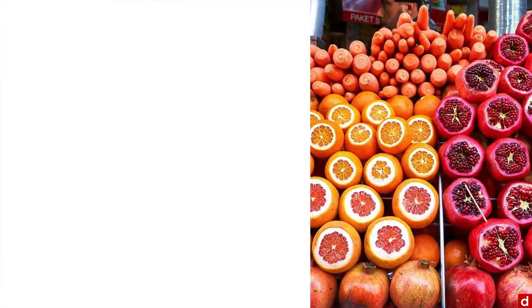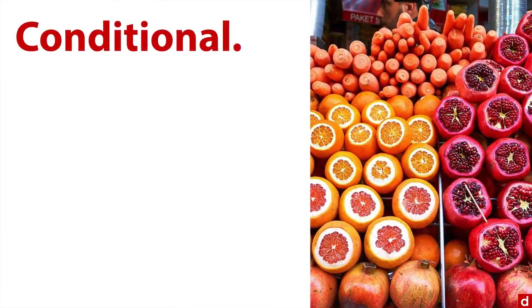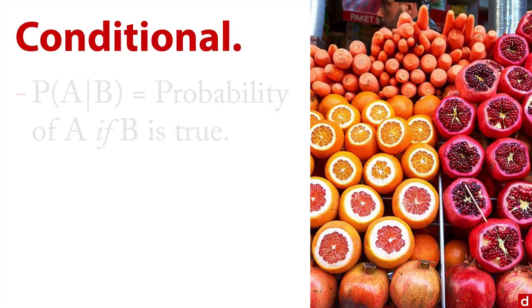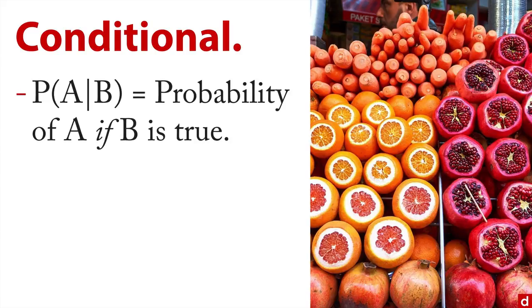Let's look at conditional probabilities, which are really important in statistics. A conditional probability is the probability of something if something else is true. You write it with a vertical line called a pipe, and it's read as 'assuming that' or 'given that.' So P(A|B) is the probability of A occurring if B is true.